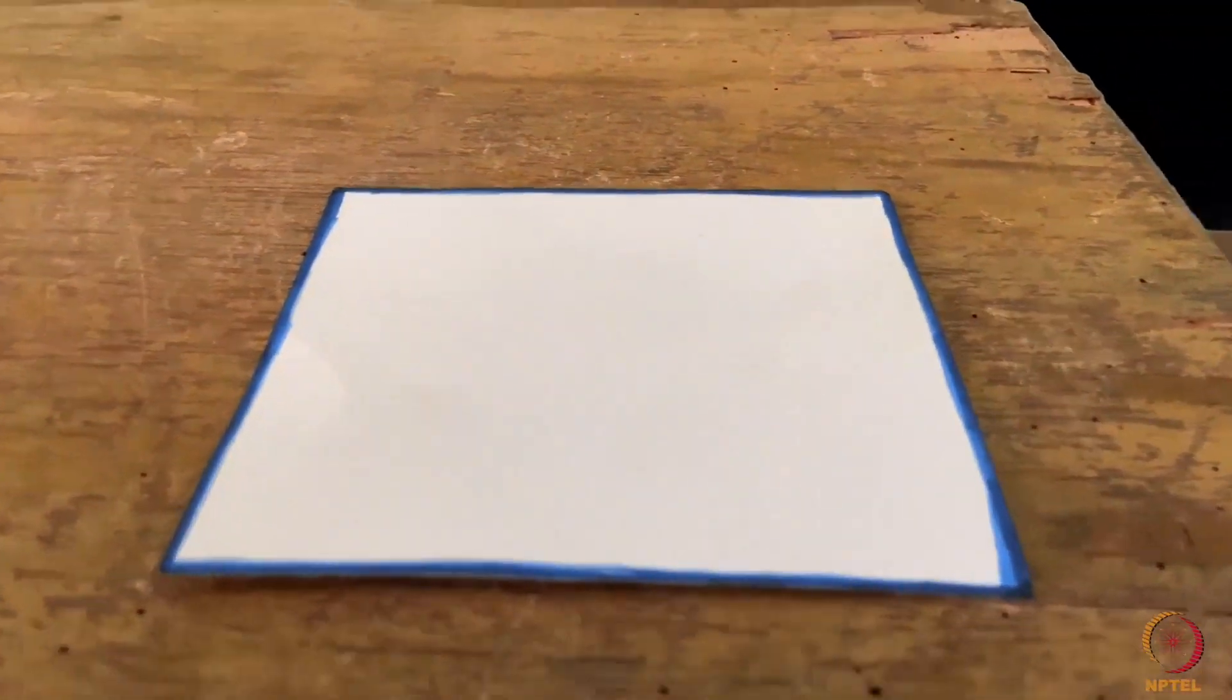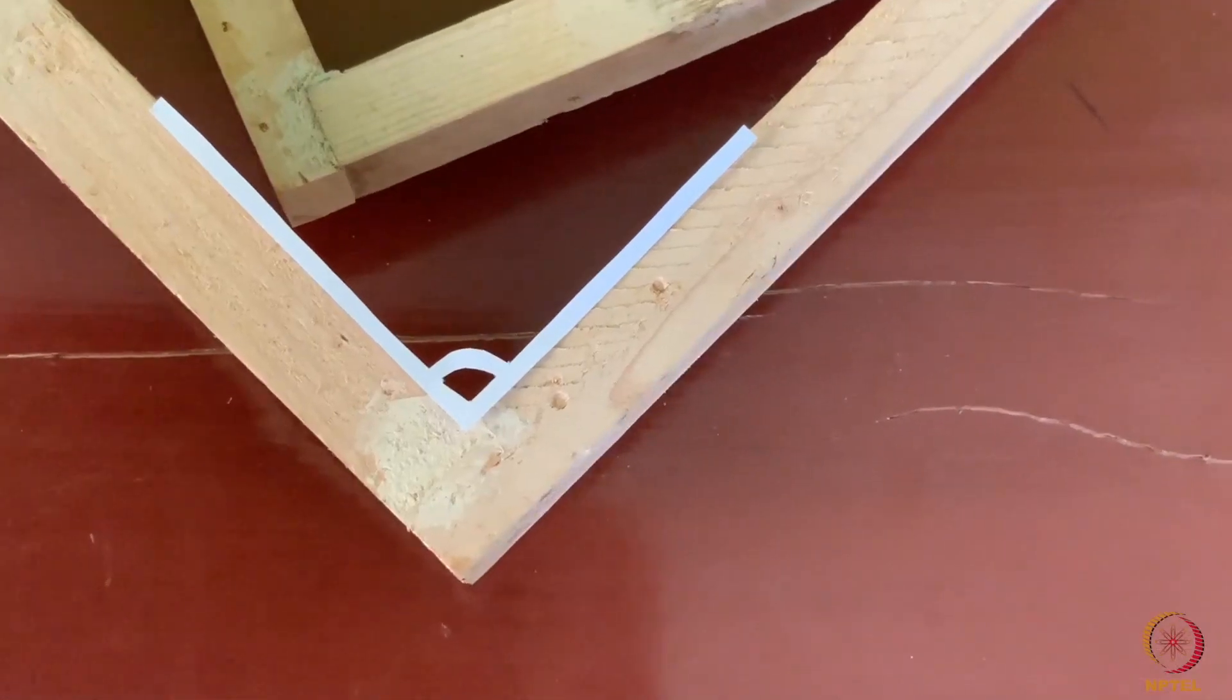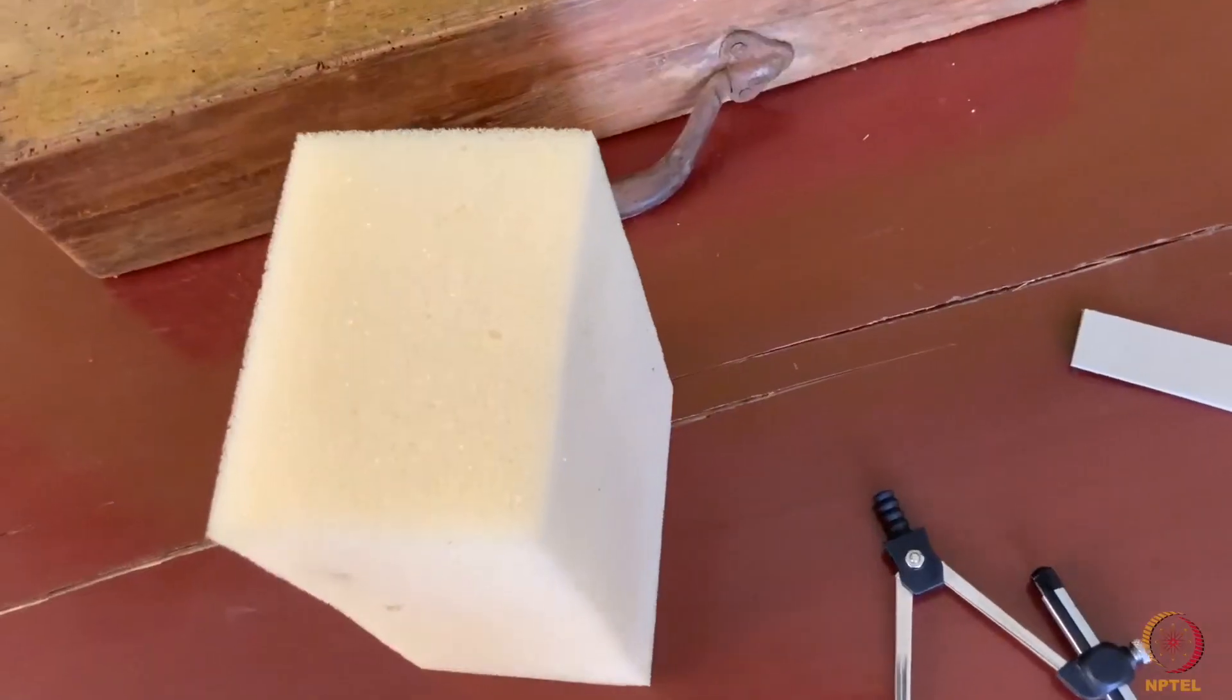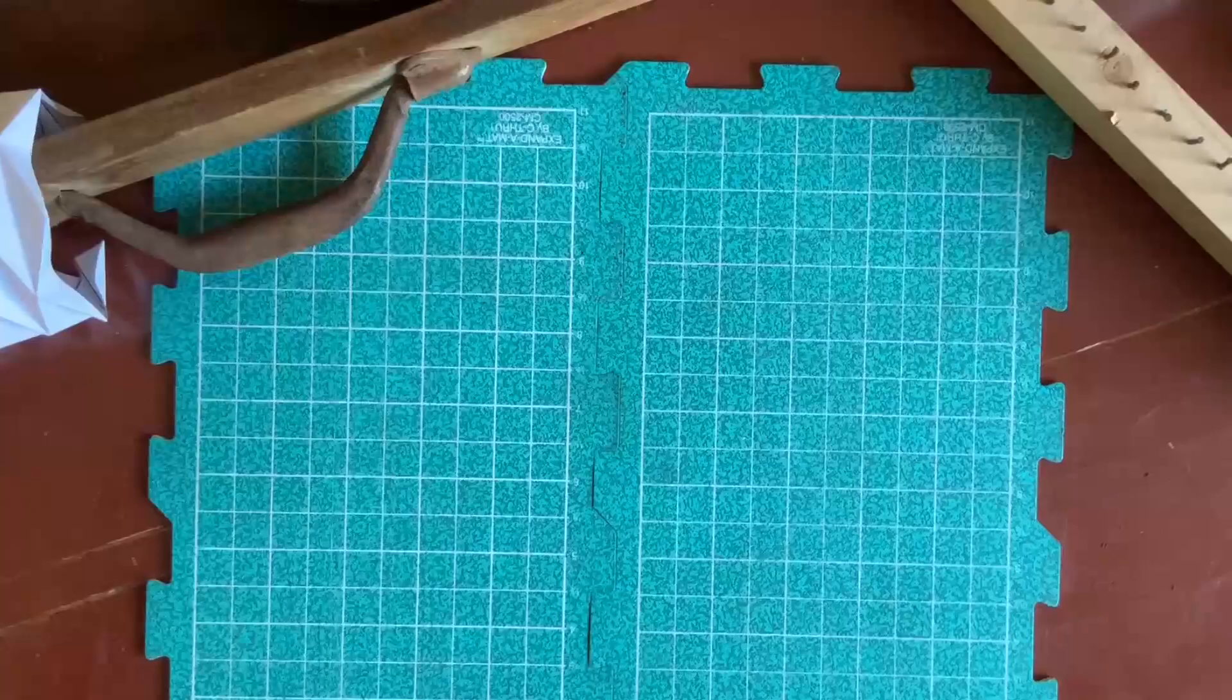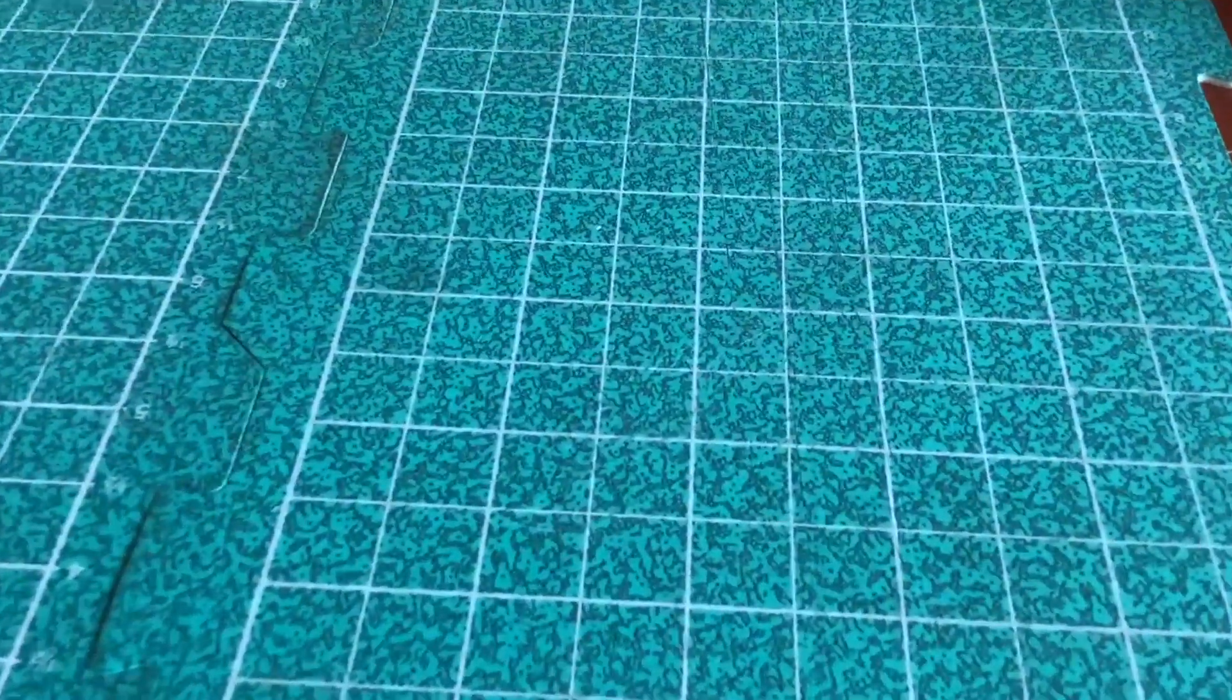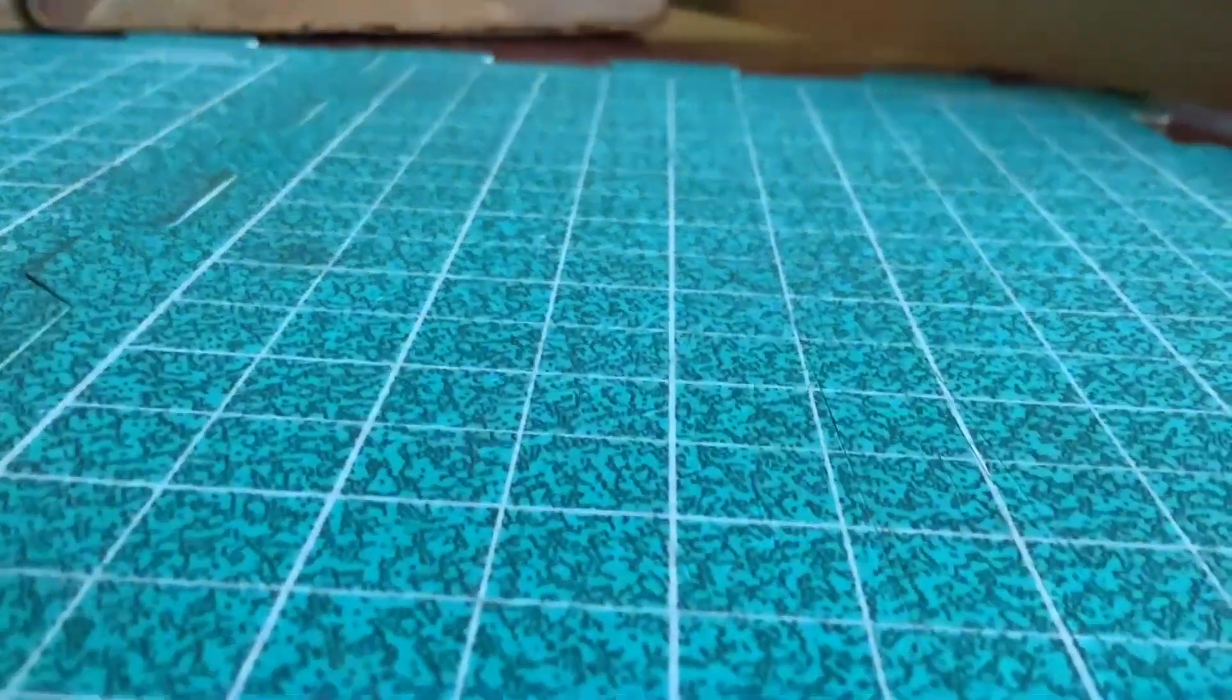Squares stop looking so square. Angles might contract or expand. Lengths keep changing. And of course, parallel lines cease to appear parallel and, in fact, converge.